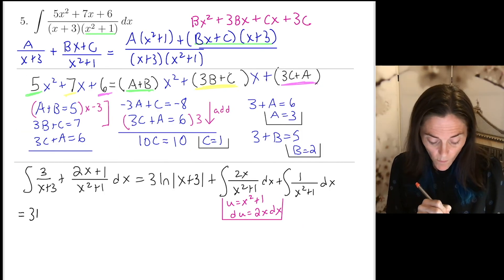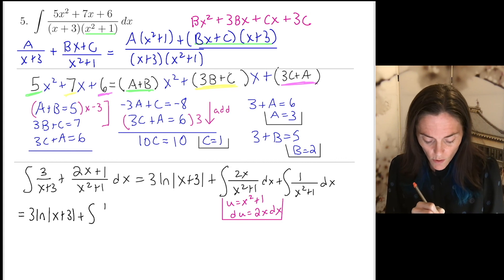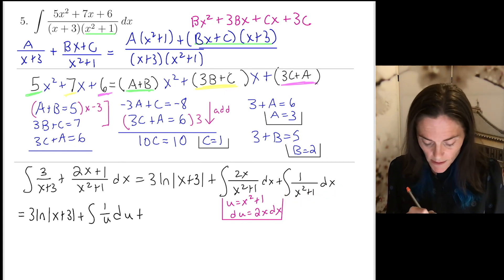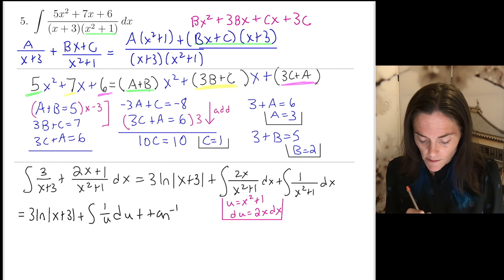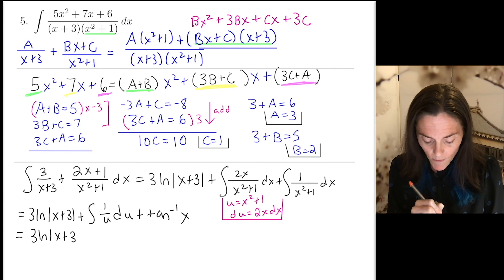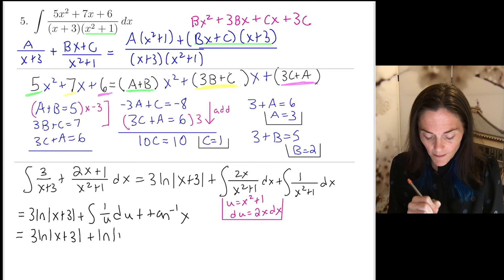We have, well, this part we just recopy. 3 ln absolute value of x plus 3. And then we have an integral of 1 over u du. Now, just like I was saying here, we can go ahead and integrate this part. This is tan inverse of x. We have two more steps. First, in this second term, which is really the only part I'm working with, I integrate with respect to u. This is ln absolute value of u. Everything else, as you can see, I just recopy.